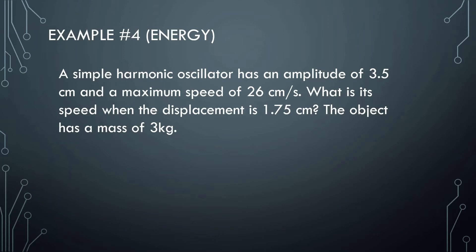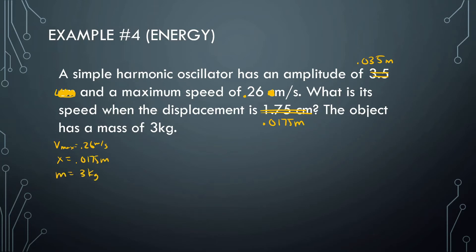I like to change all these units to meters. So the amplitude becomes 0.035 meters, the maximum speed becomes 0.26 meters per second, and the displacement becomes 0.0175 meters. Whenever you're stuck, draw out the problem or just start writing things down — that stimulates the brain and helps you move on. So: v_max = 0.26 m/s, displacement = 0.0175 m, mass = 3 kg, amplitude = 0.035 m.